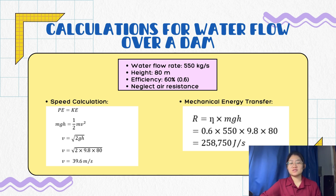For mechanical energy transfer, the potential energy of the water is converted to kinetic energy just before striking the turbines. Hence, the rate at which mechanical energy is transferred to the turbine is 258,750 Joules per second.